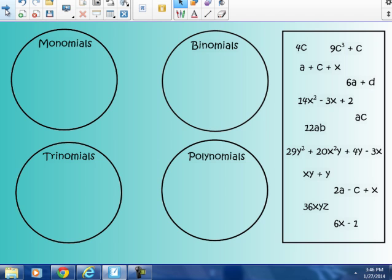So, if you would create these four circles in your notebook - one for monomial, one for binomial, one for trinomial, and one for polynomial. Make this picture in your spiral. I'm going to drag some of these terms that we see over here in the right-hand box into the correct circle.